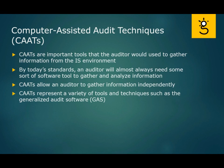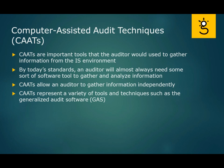Another part of auditing is the use of computer-assisted audit techniques — CAAT, or CATs for plural. CATs are important tools that, as an auditor, you need to use to gather information in this IS environment. By today's standards, you're almost always going to need some sort of software tool to gather and analyze information, and the CATs do that. They can help you gather information independently. When we say CATs, that's not a single software, but a collection of software that falls under audit techniques, representing a variety of tools and techniques.